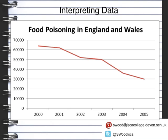You may be asked to interpret data that looks like this. Here we've got a negative correlation that shows that as the years from 2000 to 2005 go on, the number of food poisoning cases in England and Wales decreases. You might also comment on what happened between 2002 and 2003, where there is a slight plateau, and suggest what changes might explain that information.